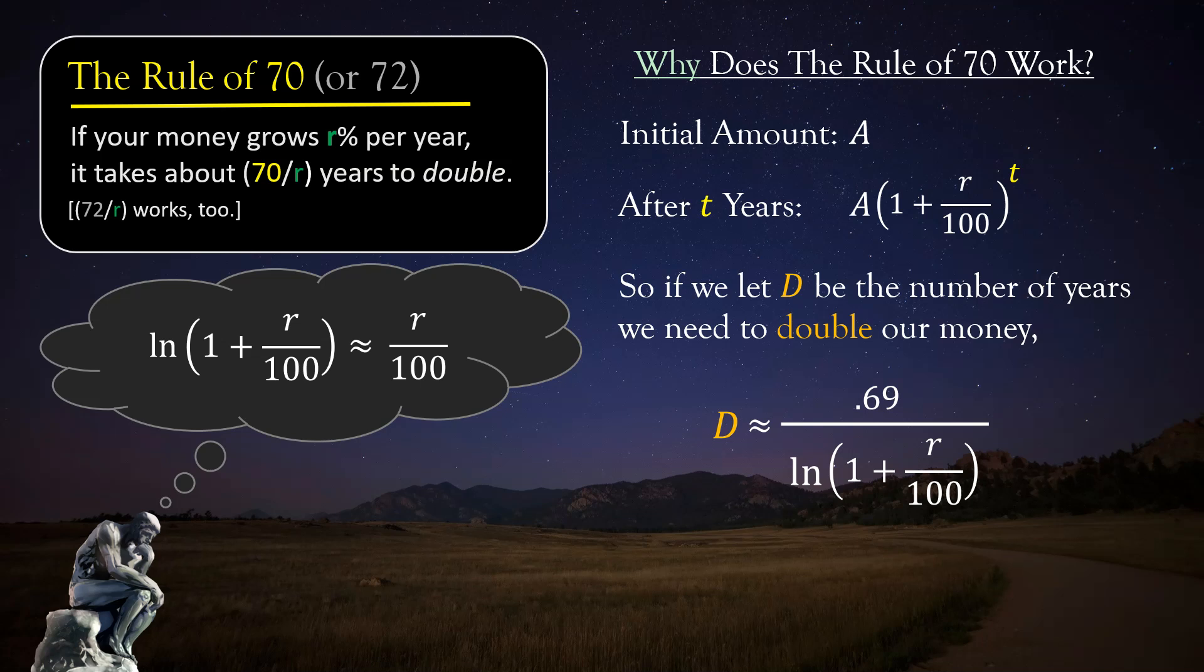At any rate, we'll now replace the bottom of our approximation for D with the much simpler expression r over 100. Dividing 0.69 by r over 100 is the same as multiplying it by 100 over r, and 100 times 0.69 is 69. So now we have that D is about 69 over r. But 69 is close to 70, so let's make that substitution too. And lo and behold, we have just deduced that D, our doubling time, is about 70 over r years. So we have explained why the rule of 70 works. Hooray!